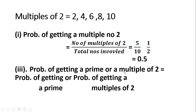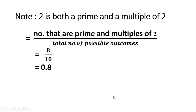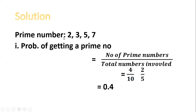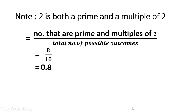For the probability of getting a prime or a multiple of two, we would normally use the addition law. However, notice that 2 is both a prime number and a multiple of two — meaning we would be counting 2 twice. So instead, we count the distinct items from 1 to 10 that are either prime or a multiple of two: 2, 4, 6, 8, 10 (multiples of two) plus 3, 5, 7 (remaining primes, since 2 is already counted) — giving us 8 items. So the probability is 8 over 10, which is 0.8.